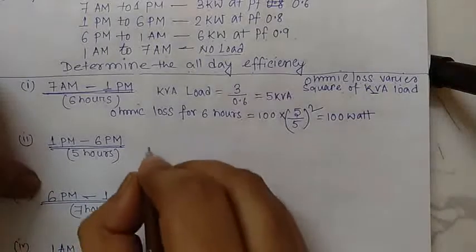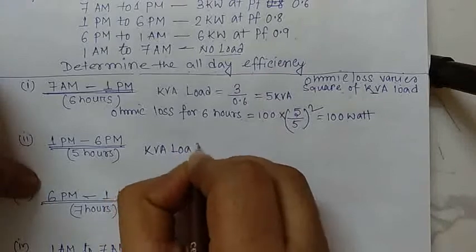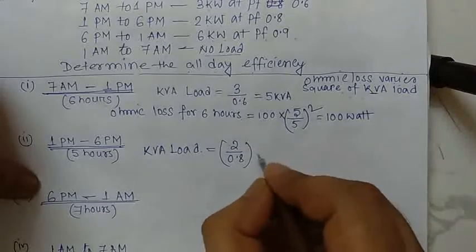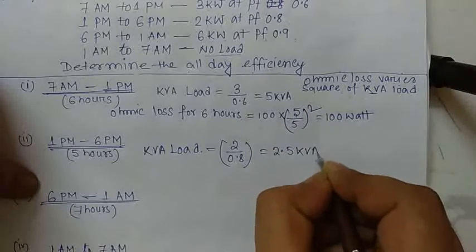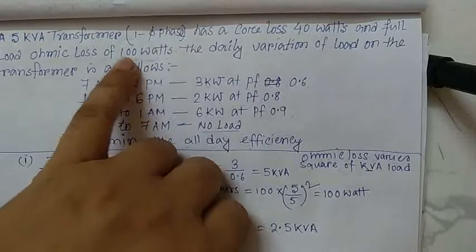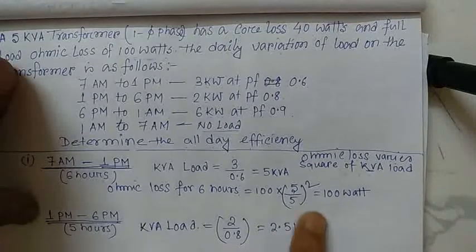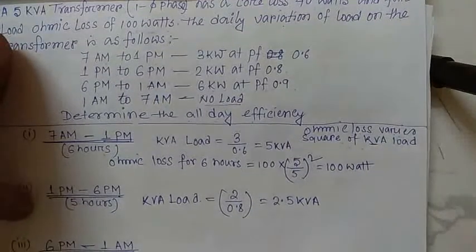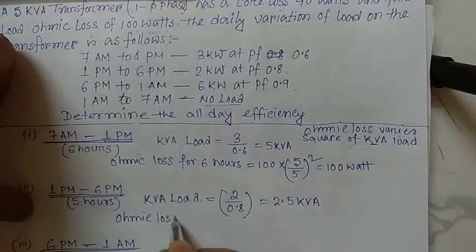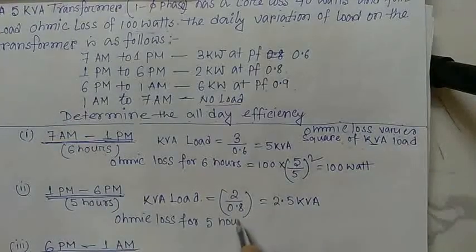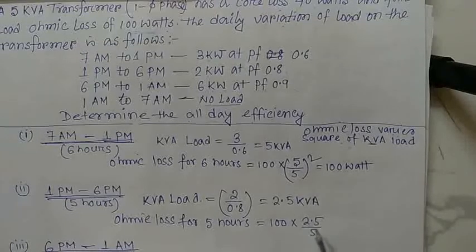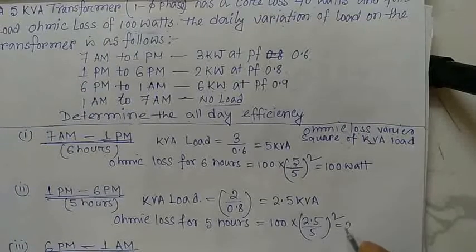For 1pm to 6pm (5 hours), the kVA load is 2 kilowatt divided by 0.8 = 2.5 kVA. Since full load ohmic loss is 100 watts at 5 kVA, the ohmic loss for these 5 hours is 100 × (2.5/5)² = 25 watts.